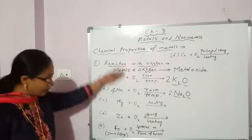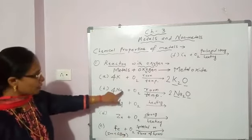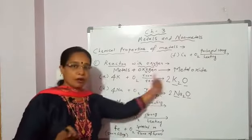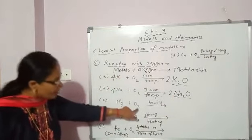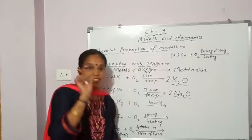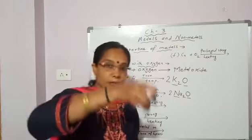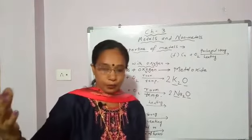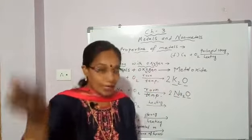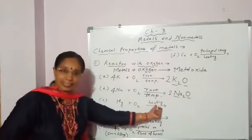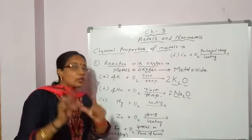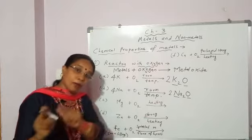Next, magnesium. Now the reactivity goes on decreasing. Sodium and potassium react with oxygen at room temperature. Magnesium reacts with oxygen not at room temperature but on heating. Magnesium ribbon — when you burn it, it burns with a dazzling, sparkling light. And what is left? White powder. So that white powder is magnesium oxide, formed when magnesium reacts with oxygen on heating.